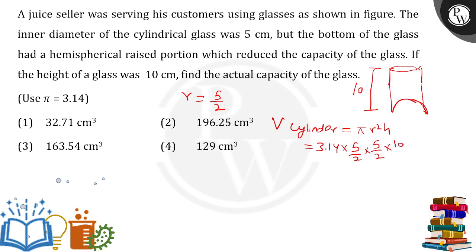When you go on to do the calculation for this one, you will come up with the volume of the cylinder as 196.25 cm³. This is the volume.